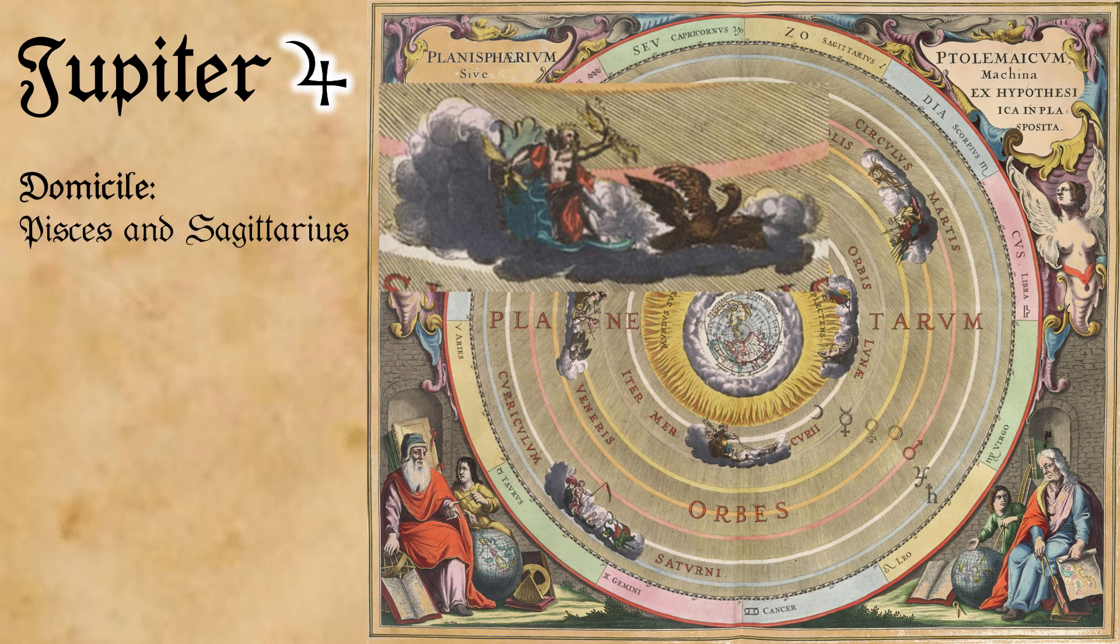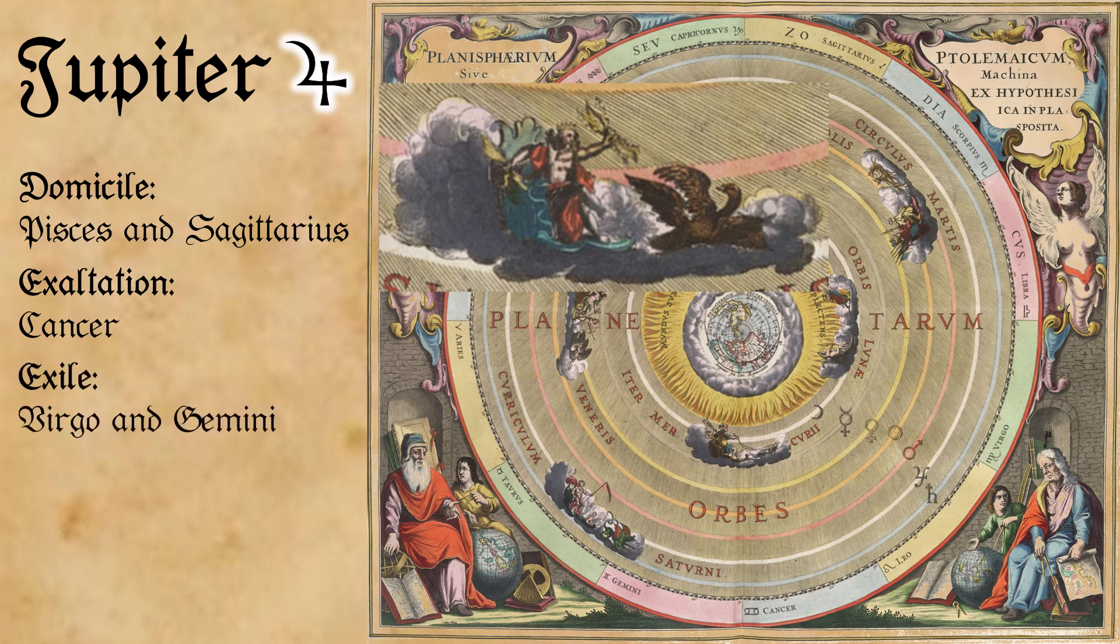Jupiter is in its domicile in Pisces and Sagittarius. Jupiter's exaltation is in Cancer. Jupiter is in exile in Virgo and Gemini, and in its fall in Capricorn.